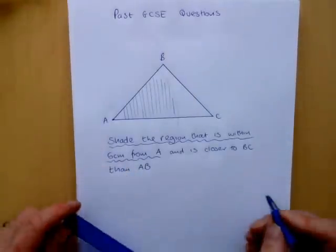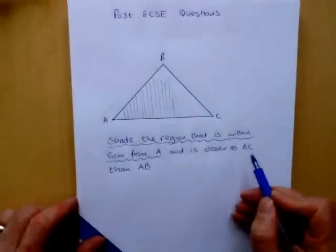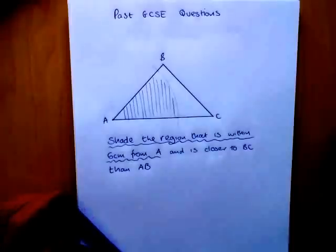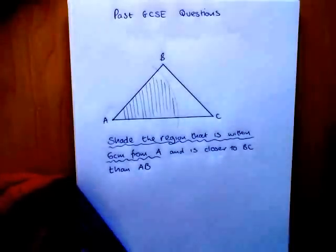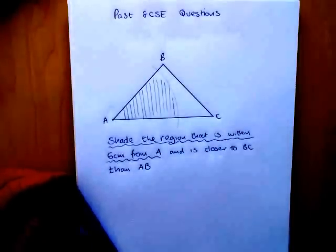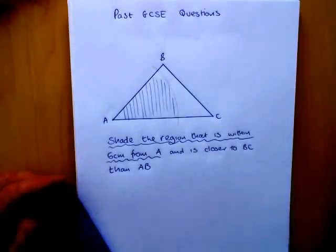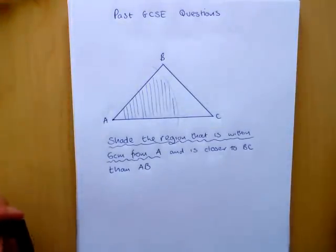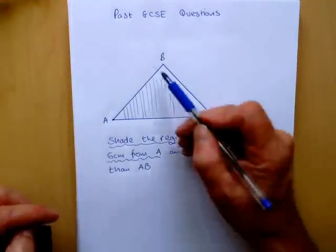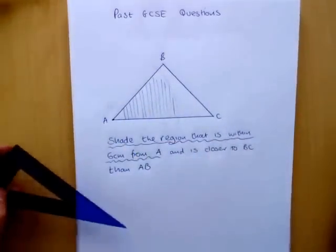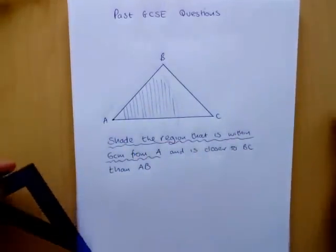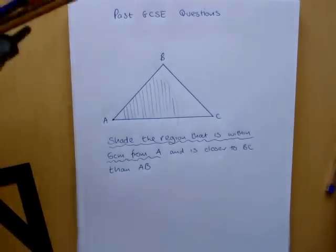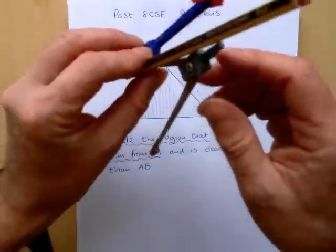Now the second condition — closer to BC than AB — requires an angle bisector, because we need to find a line that's the same distance from BA as it is from BC. And we do that by constructing the angle bisector.